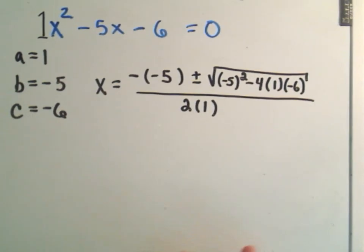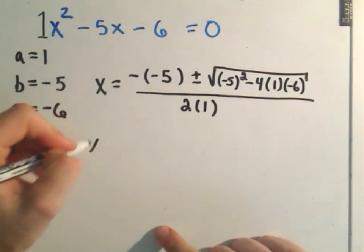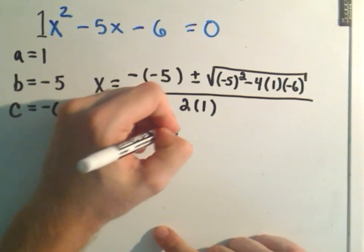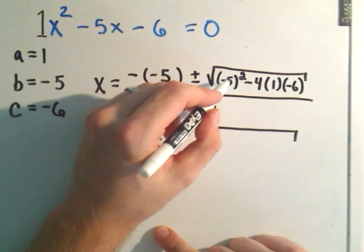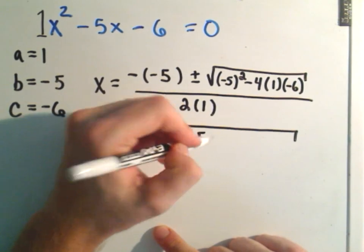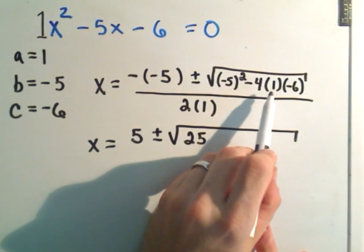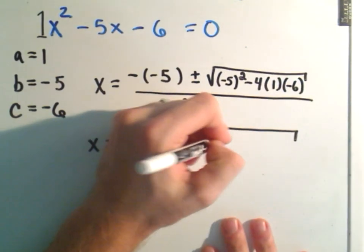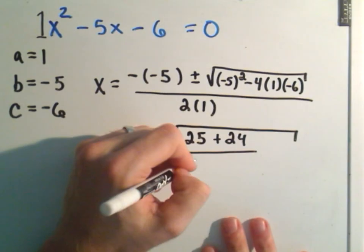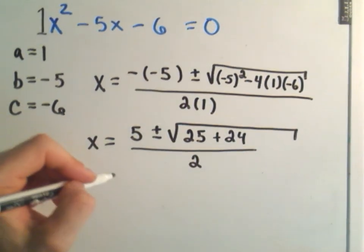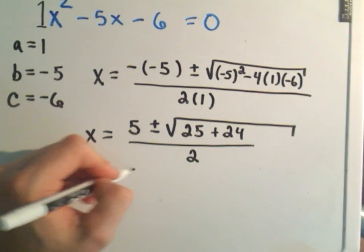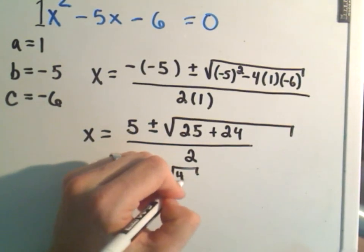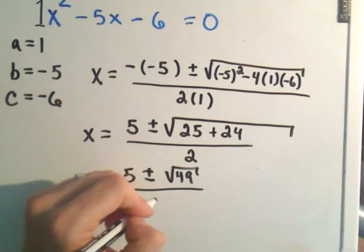Now it's a matter of simplifying. A negative and a negative make a positive, plus or minus the square root. -5 squared is 25, and then -4 times 1 is -4, times -6 gives positive 24, all over 2. We get 5 ± √(25 + 24), which is √49, divided by 2.